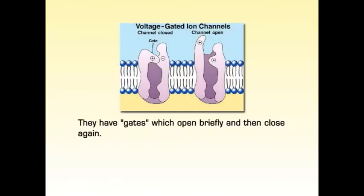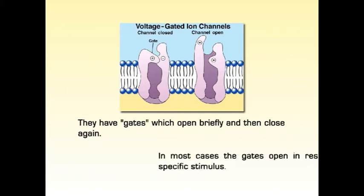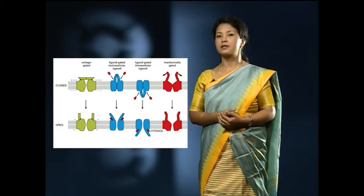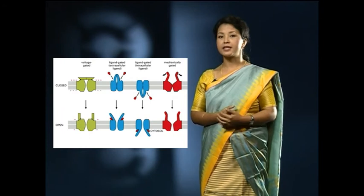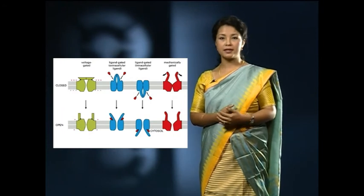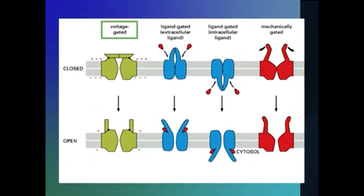Ion channels are not continuously open. Instead, they have gates which open briefly and then close again. In most cases, the gates open in response to a specific stimulus. As shown in this accompanying diagram, ion channels can be classified into voltage-gated channels, mechanically gated channels, or ligand-gated channels depending on the nature of the stimuli.